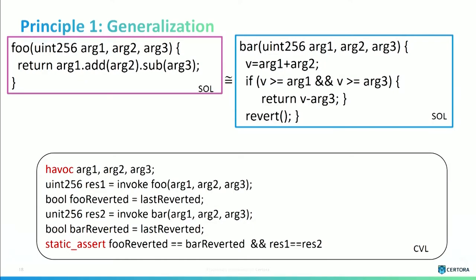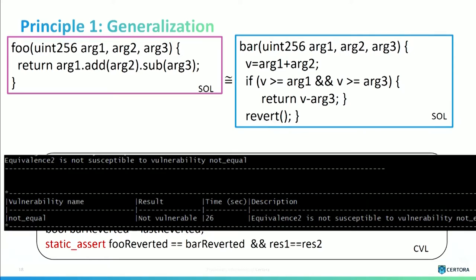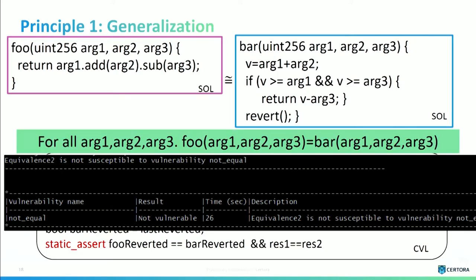Here is a fix, also taken from the internet. You see people using something like safe math with complex logic. Running the same CVL again, the tool automatically proved — without any help from the user — that this vulnerability cannot happen. It proved that for all arguments arg1, arg2, arg3, foo(arg1, arg2, arg3) is equivalent to bar(arg1, arg2, arg3). You can give it all kinds of complicated code and it will tell you this answer.